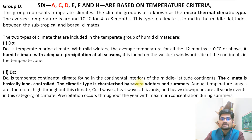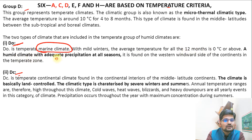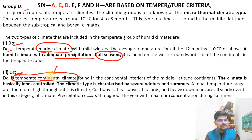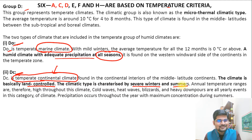Group D on the temperature criteria has two subtypes: DO and DC — simple to remember as DO DC. DO is the temperate marine climate, with humid conditions and adequate precipitation in all seasons throughout the 12 months. DC is the temperate continental climate — in the mid-latitude belt interior of the continent, which is largely drier and land-controlled, characterized by severe winters and temperature extremity due to its continental nature.